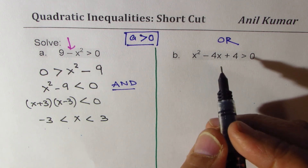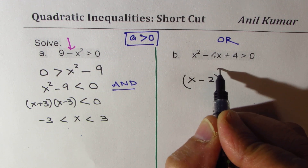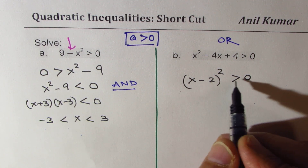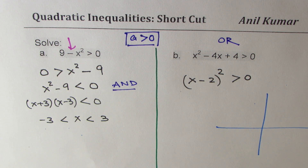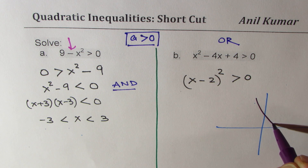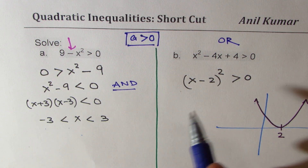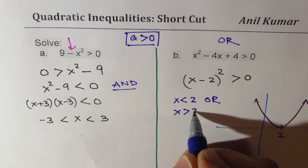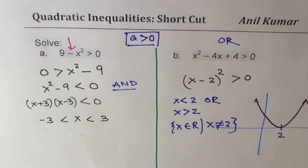Next: this is a perfect square, which can be written as (x-2)² > 0. There is only one zero here — at x = 2 — and except for that zero, all other values satisfy the inequality. So the solution is x is less than 2 or x is greater than 2, which is the same as x belongs to real numbers where x is not equal to 2. It is an OR situation.